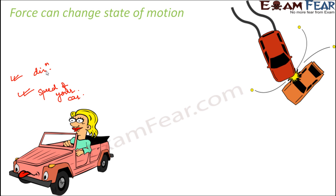Similarly, let's suppose there are two vehicles running on the road. If one of them applies the accelerator without seeing if another vehicle is coming, the two vehicles might collide with each other. Both were moving initially, but now their speed decreased — in fact, both of them may have come to rest. So their state of motion changed.